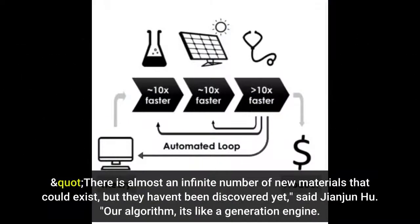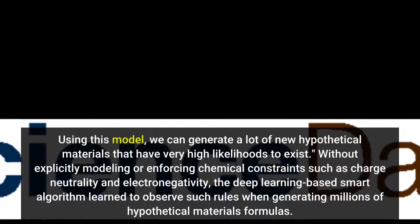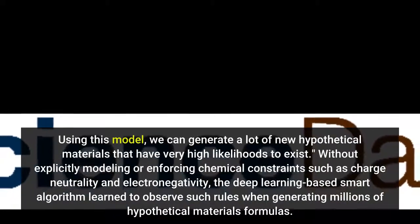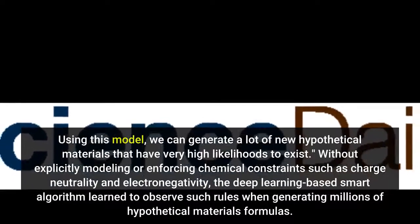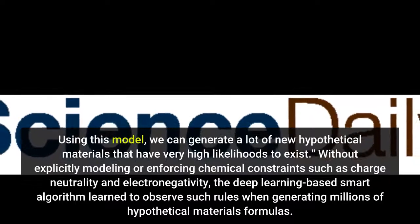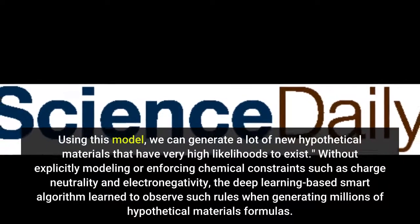"There is almost an infinite number of new materials that could exist, but they haven't been discovered yet," said Jianjun Hu. "Our algorithm is like a generation engine." Using this model, researchers can generate a large number of new hypothetical materials that have very high likelihoods to exist. Without explicitly modeling or enforcing chemical constraints such as charge neutrality and electronegativity, the deep-learning-based smart algorithm learned to observe such rules.